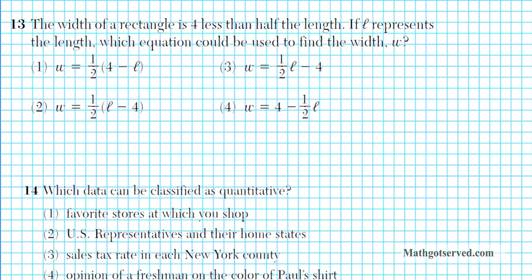Let's shift our attention to question 13. It says the width of a rectangle is 4 less than half the length. If l represents the length, which equation should be used to find the width w? The one thing you want to note is that when you're translating an equation from word form into symbolic or numerical form, it's written in a reverse order.